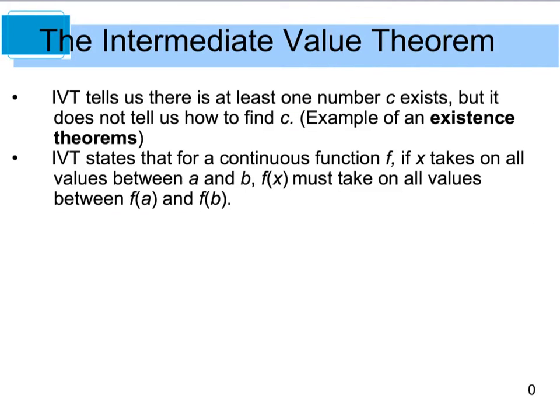The intermediate value theorem does tell us that there's at least one point. There could be more, but there is at least one number c that exists. But the downfall is it doesn't tell us how to find that point. This theorem is an example of what we call an existence theorem. It's telling us that it's there, but it doesn't tell us how to find it.